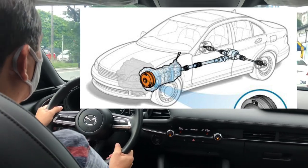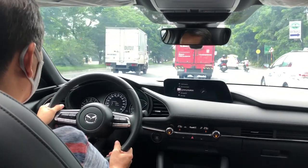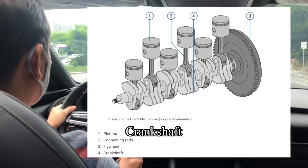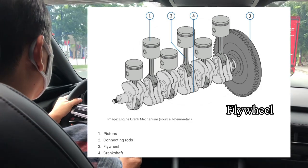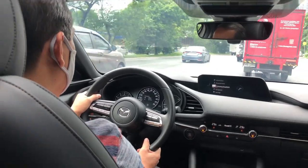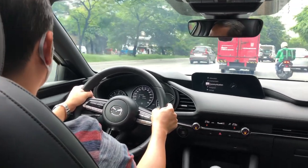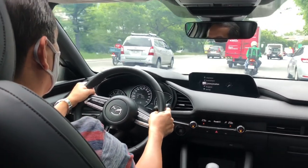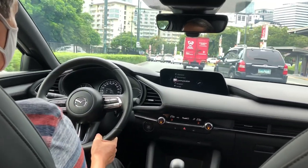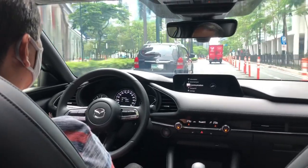The engine produces power, and that power is transmitted to the crankshaft. The crankshaft rotates and is connected to the flywheel, so that rotating power should be transmitted to the wheels. The flywheel is bolted to the crankshaft, and it acts as a balancer.